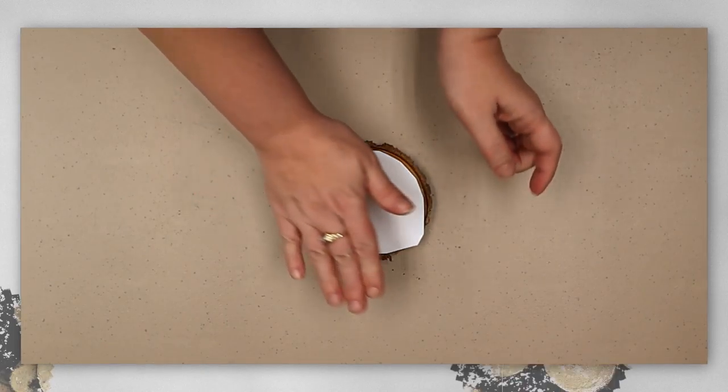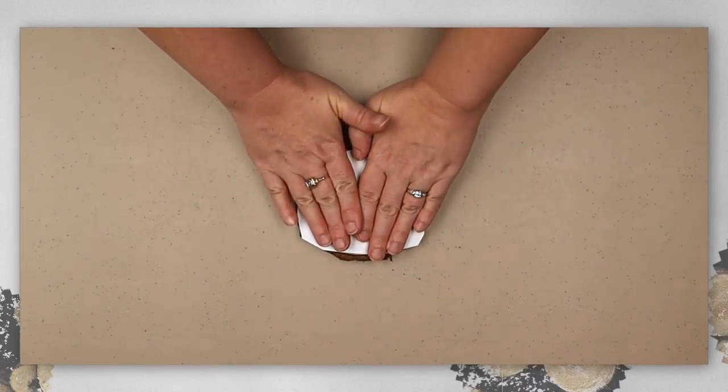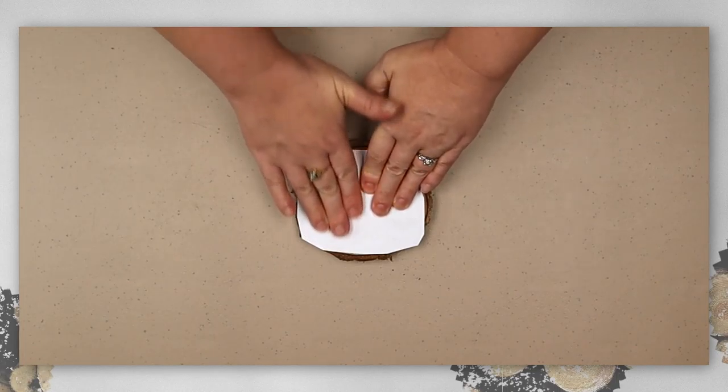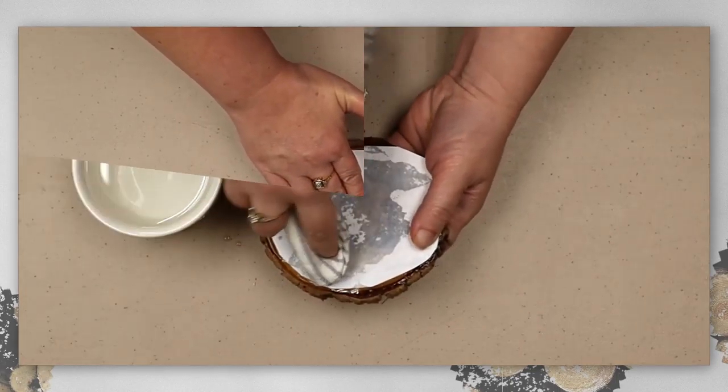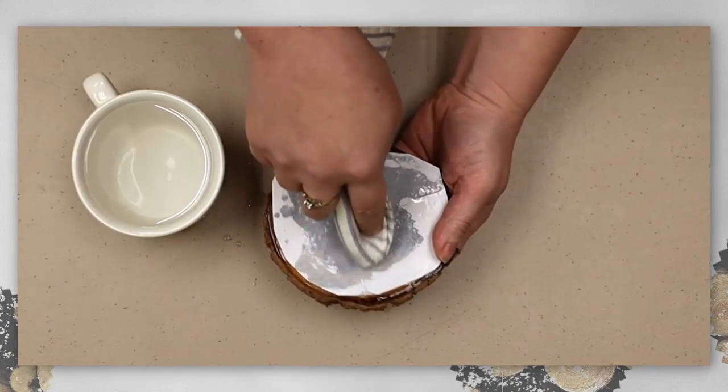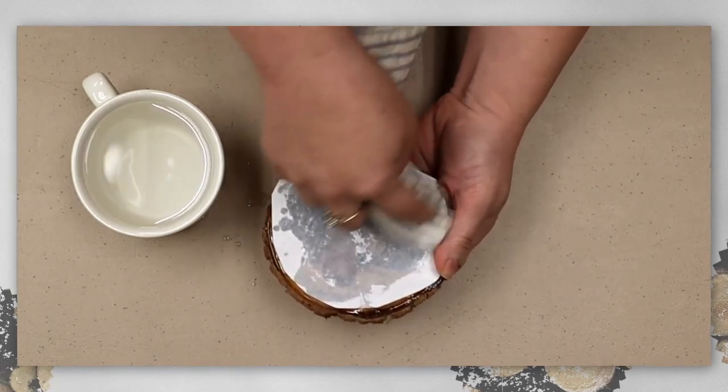Lay your picture printed side down on top of the glue. Smooth out your picture across the wood slice so there aren't any bubbles. Let it dry overnight.